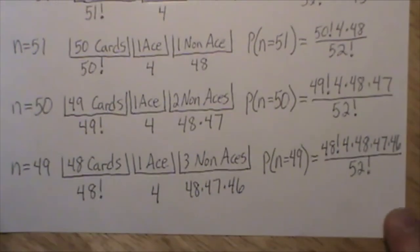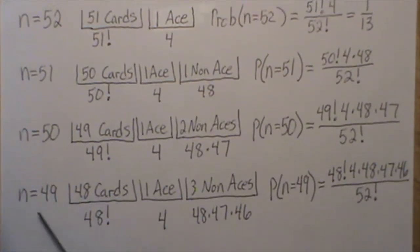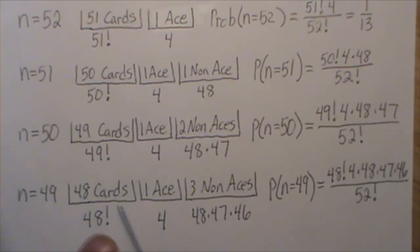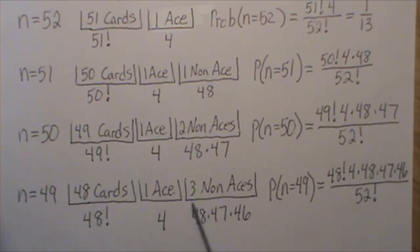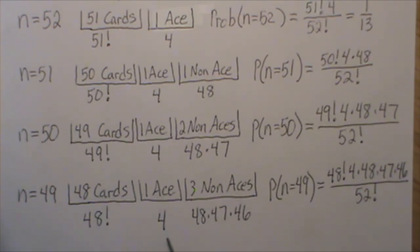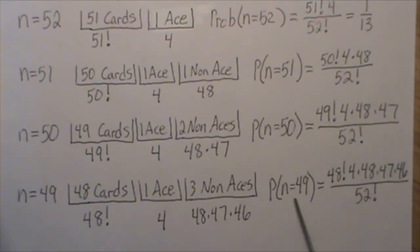Let's let N equal 49. There are three bins: three non-aces, one ace, and 48 cards. The number of ways to choose three non-aces is 48 times 47 times 46, four ways to choose an ace, and 48 factorial ways to arrange the remaining cards. So the probability that N equals 49 is that product divided by the total sample size. Now let me jump into R software to finish this video.